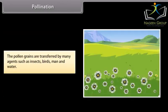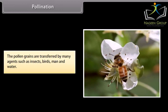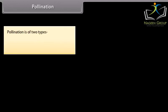The pollen grains are transferred by many agents such as insects, birds, man and water. Pollination is of two types: self-pollination, cross-pollination.